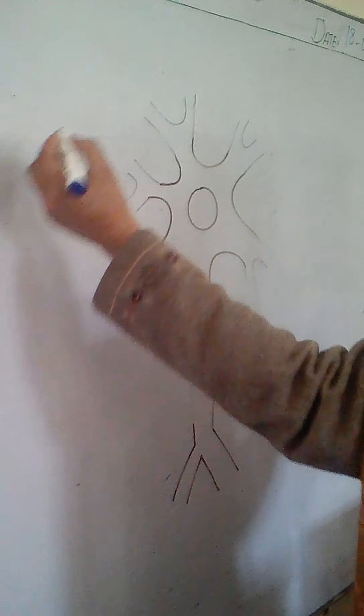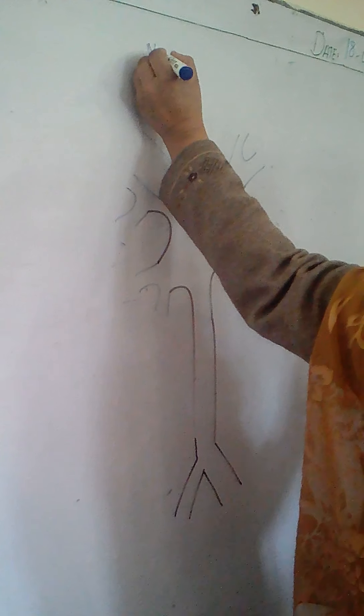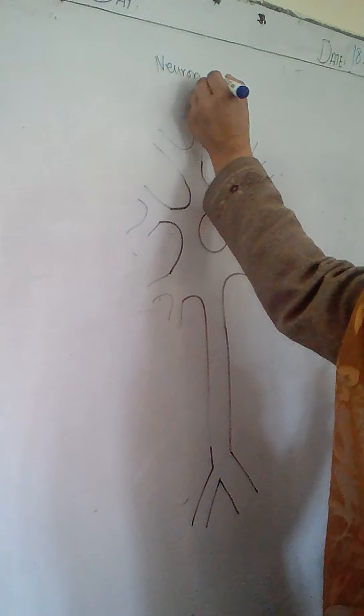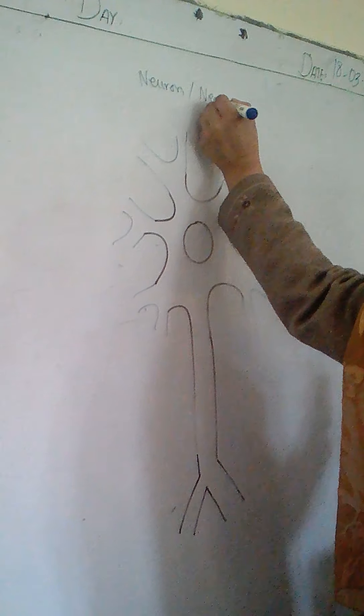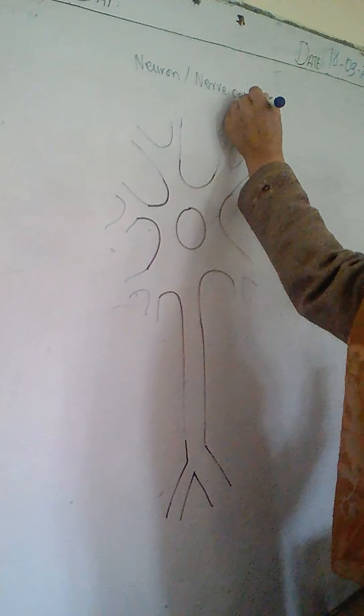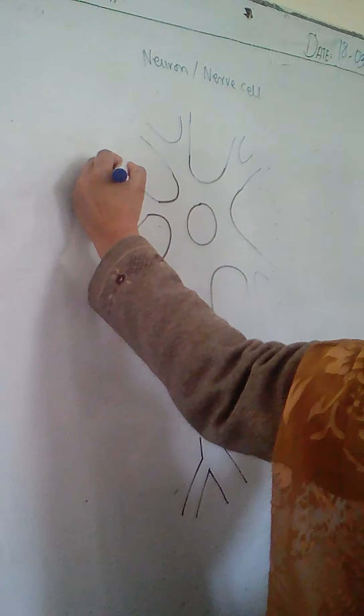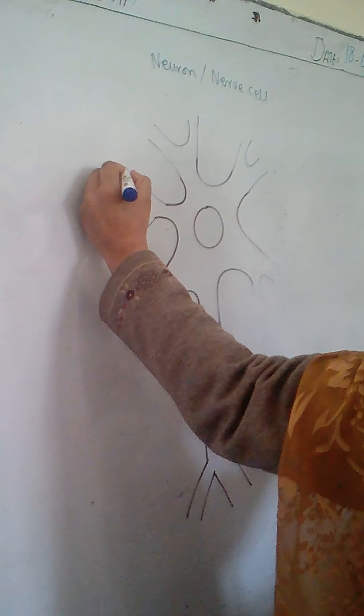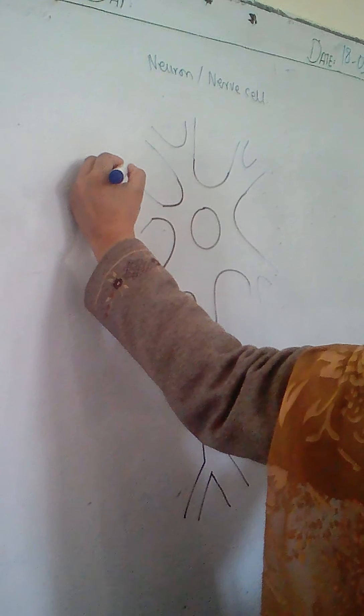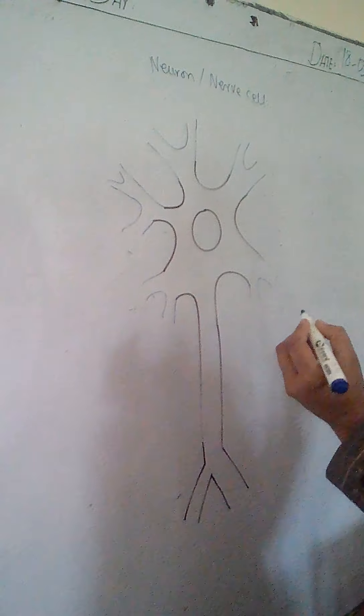This is a neuron or nerve cell. It is a very sensitive and important cell. And today we will learn how to draw it.